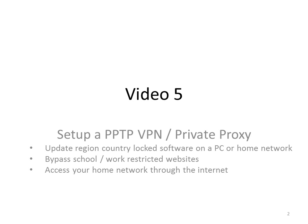So this is video 5, talking about how to set up a PPTP VPN or a private proxy. You can use this setup to update a region or country-locked software on a PC or a home network. You could also use this system to bypass school or work restricted websites, and you can access your home network through the internet using this system.